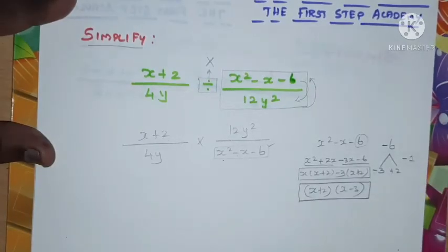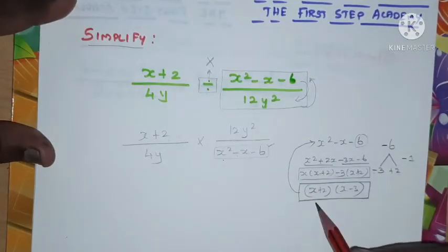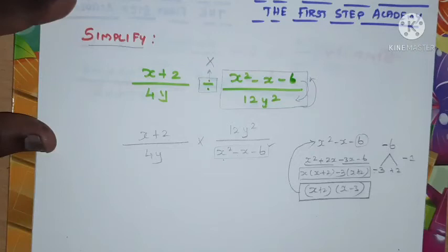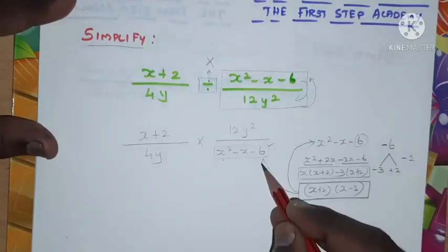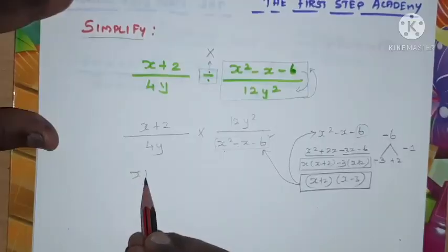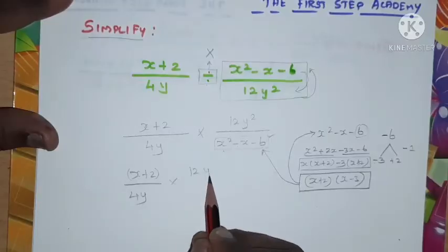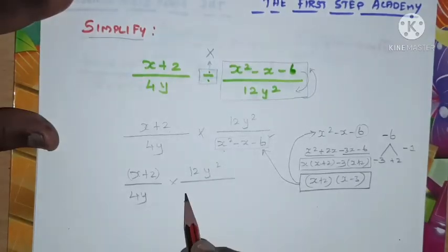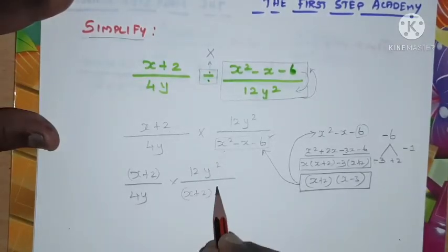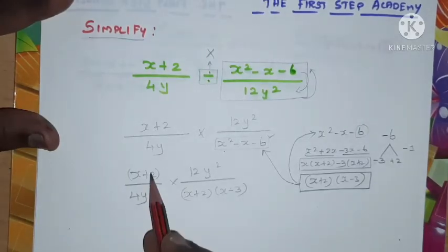The factors are (x+2) and (x-3). So the factors of x²-x-6 are (x+2) and (x-3). Substitute this in the respective place. When I'm substituting, what will we get? (x+2)/(4y) times (12y²)/[(x+2)(x-3)].